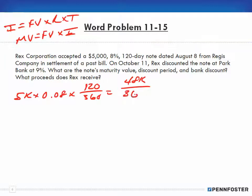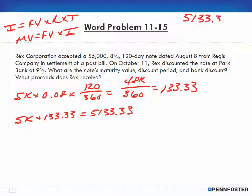Divided by 360, which is 133.33. The maturity value then becomes 5,000 plus 133.33, or 5,133.33. So that's our maturity value of 5,133.33.